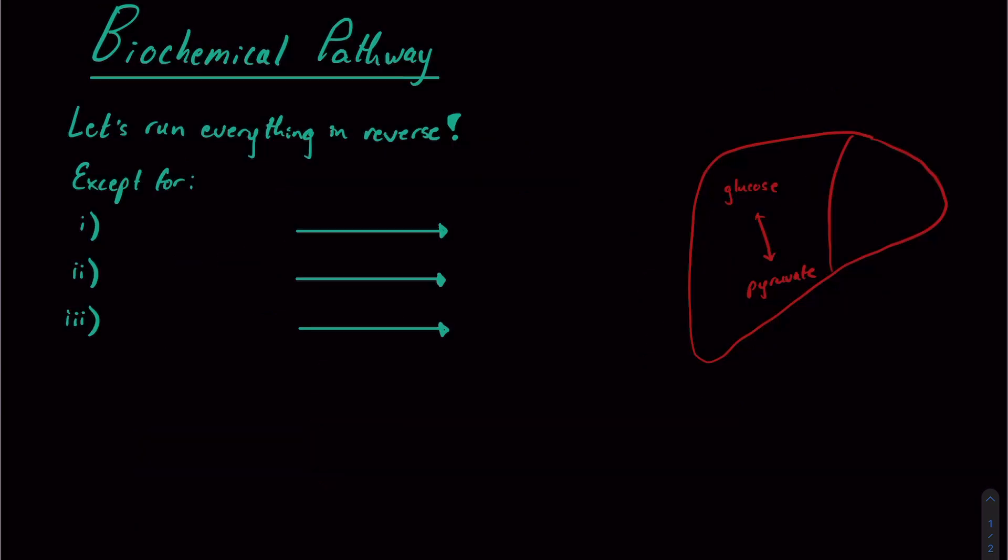This brings us to the biochemical pathway of gluconeogenesis. And really, this is going to be the second highest yield thing that we're going to think of after the fed versus fasting state conceptual process. So in terms of the biochemical pathway, it might be most useful to think about it in terms of running everything in reverse.